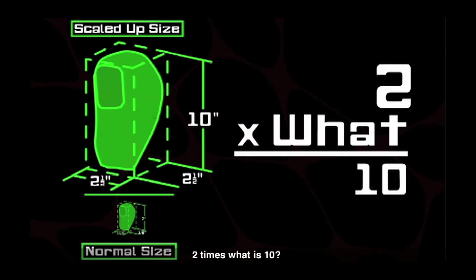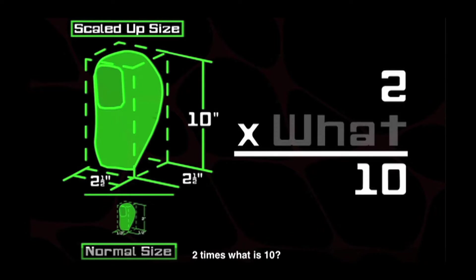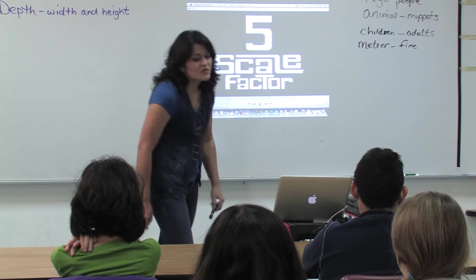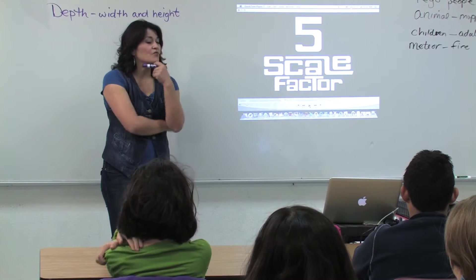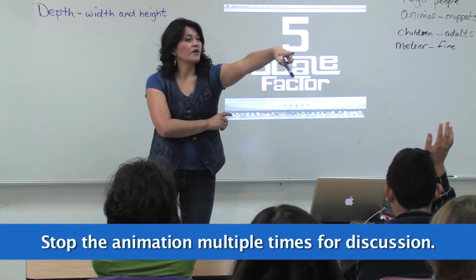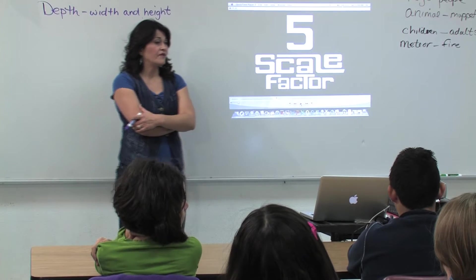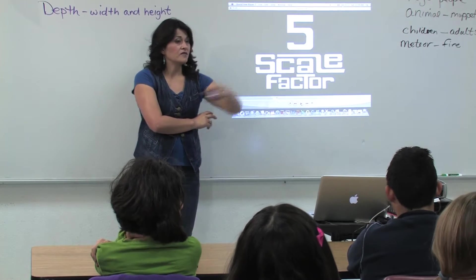Two times what is ten? Student: Five. Five is the scale factor. I want to talk about this — what did she do to find that out? Student Naomi: She divided. She divided ten divided by two. What's another way she could have found that? Dawson: Two times what is ten? Scale Ella provides examples of scaling up and scaling down, but really it shows students there's a variety of ways to solve a problem.